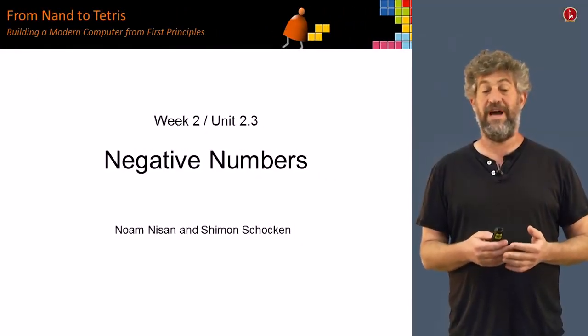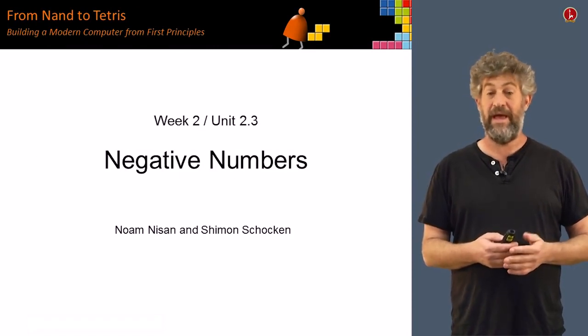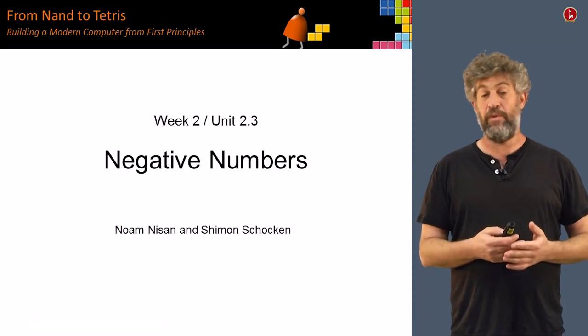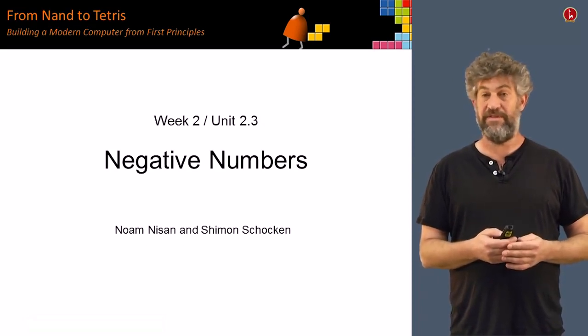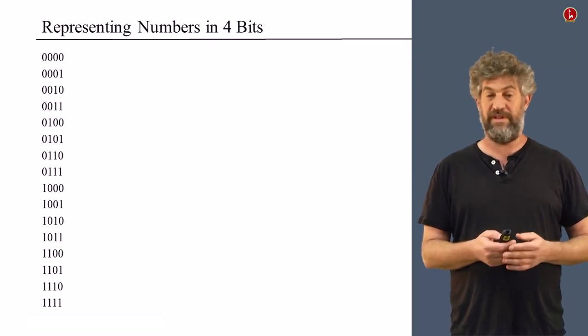In the last two units, we've seen how to represent integers as binary numbers using bits and how to manipulate them, how to add them. But so far, we only discussed positive numbers. And of course, our computers will have to deal also with negative numbers. So how can we deal with them?